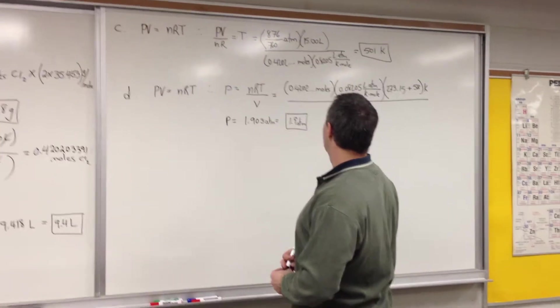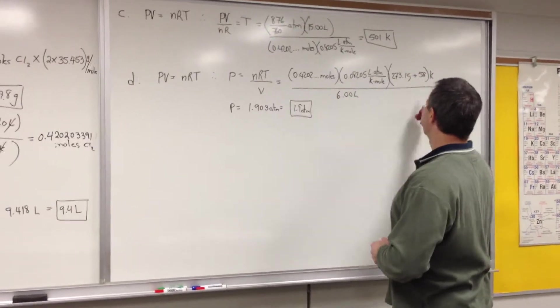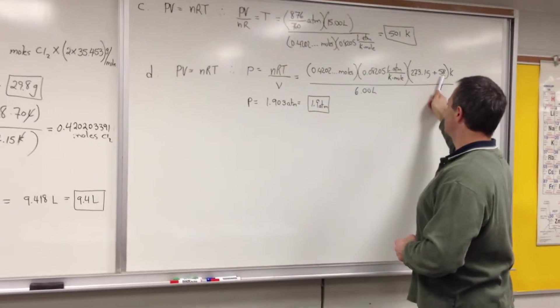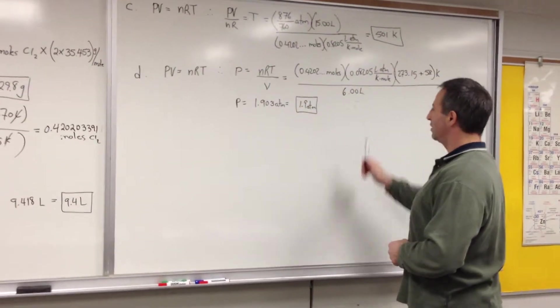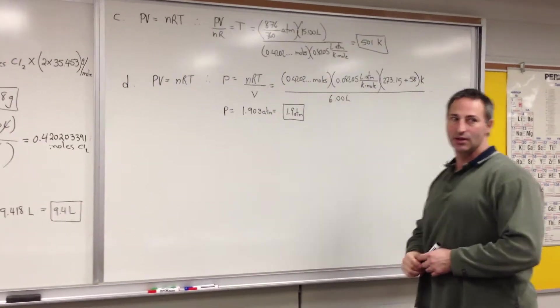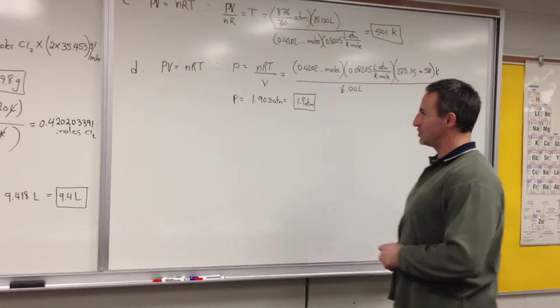The last part of the question, they're asking us what the pressure is under similar conditions, except this time the temperature is 58 Celsius. So we simply convert Celsius temperature into the absolute temperature scale, and we're also asked to do it with a volume of 6 liters. The final result is you get 1.9 atmospheres as a pressure.